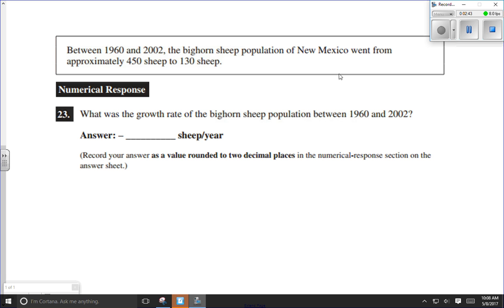Here we have between 1960 and 2002, so there's our time frame. The bighorn sheep population in New Mexico went from approximately 450 sheep to 130 sheep. We don't have to worry about natality, mortality, immigration, and emigration here. We're given a total at the beginning and a total at the end.